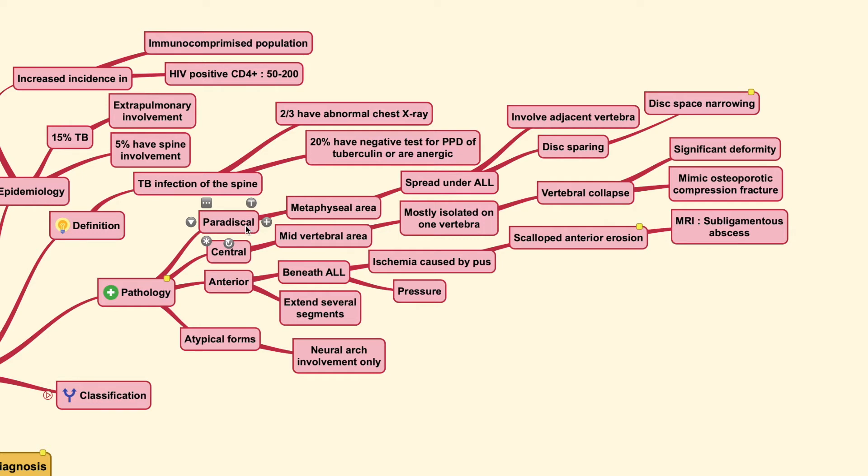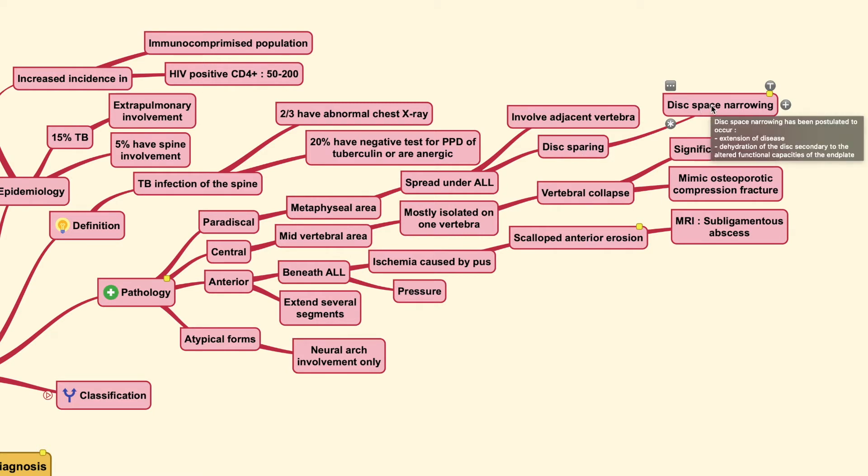Now, the paradiscal type is the one that forms around the metaphyseal area and it spreads anteriorly through the undersurface of the anterior longitudinal ligament. And they usually may skip from one vertebrae to the other with sparing of the disc. Usually, some will, although the disc is spared, some would usually find disc space narrowing which may be caused by direct extension of the disease or also dehydration of the disc secondary to the altered function of the vertebral plate.